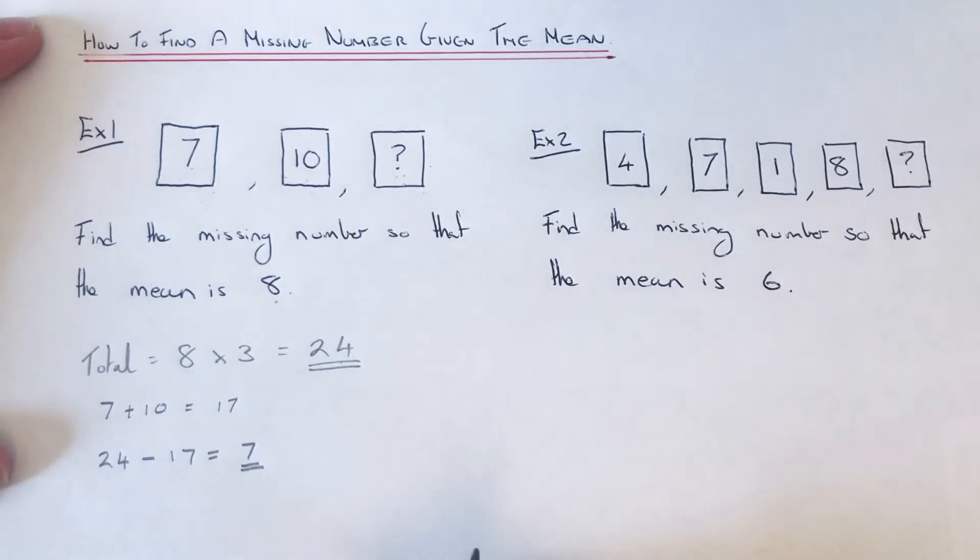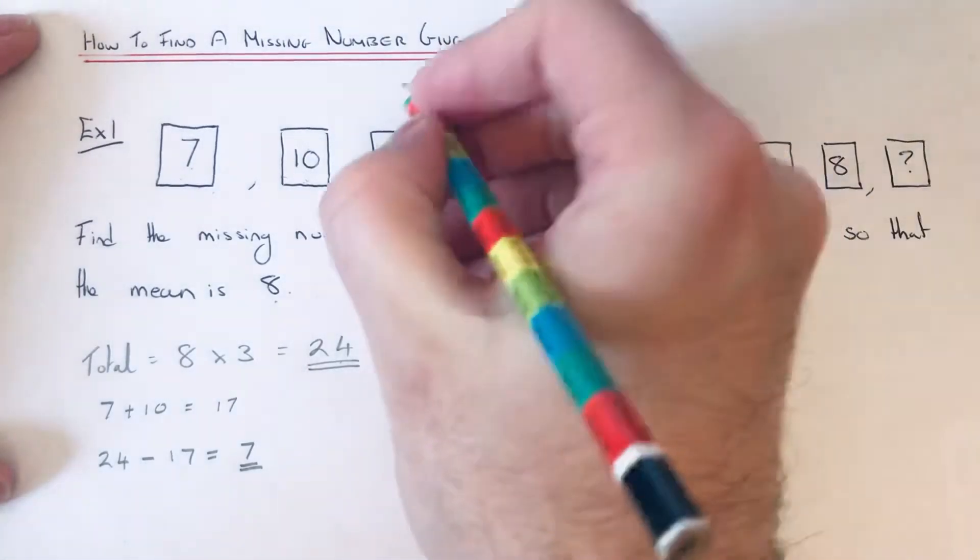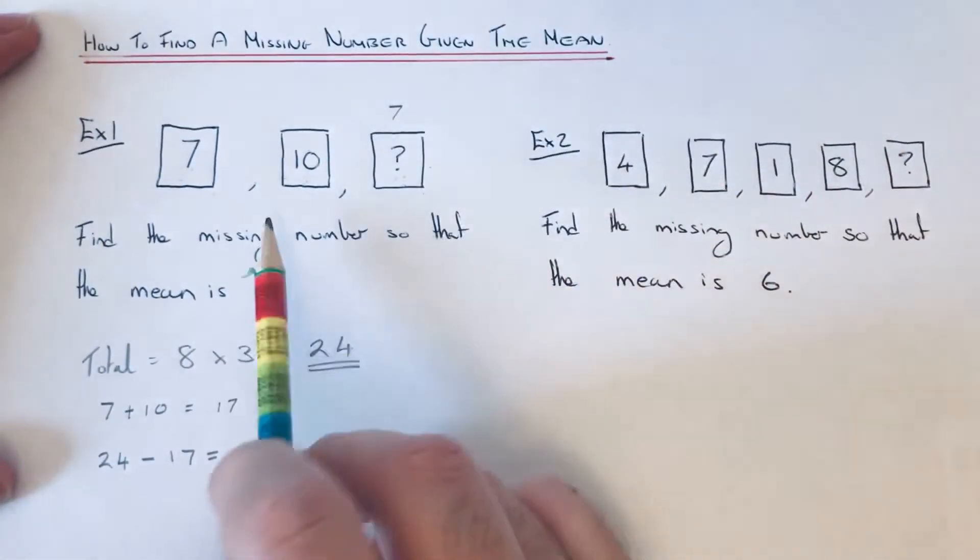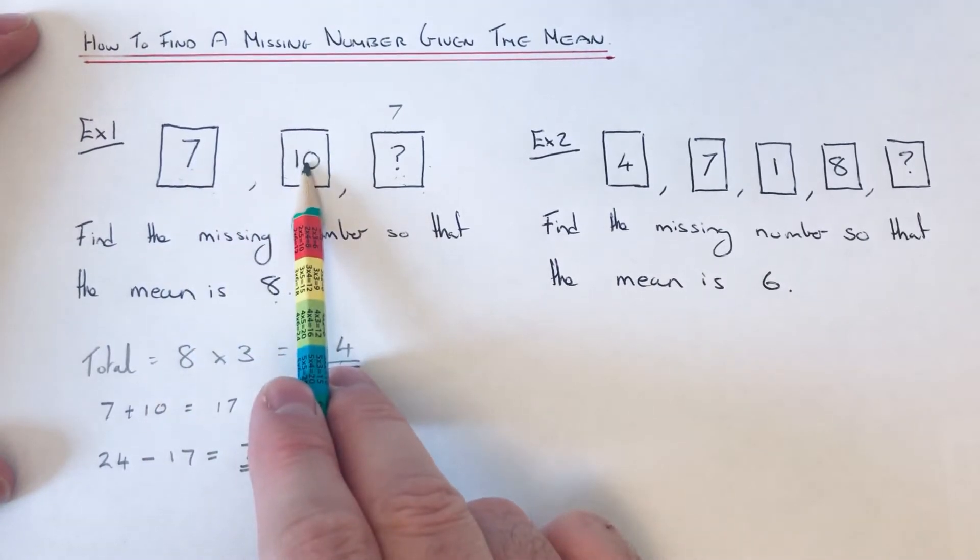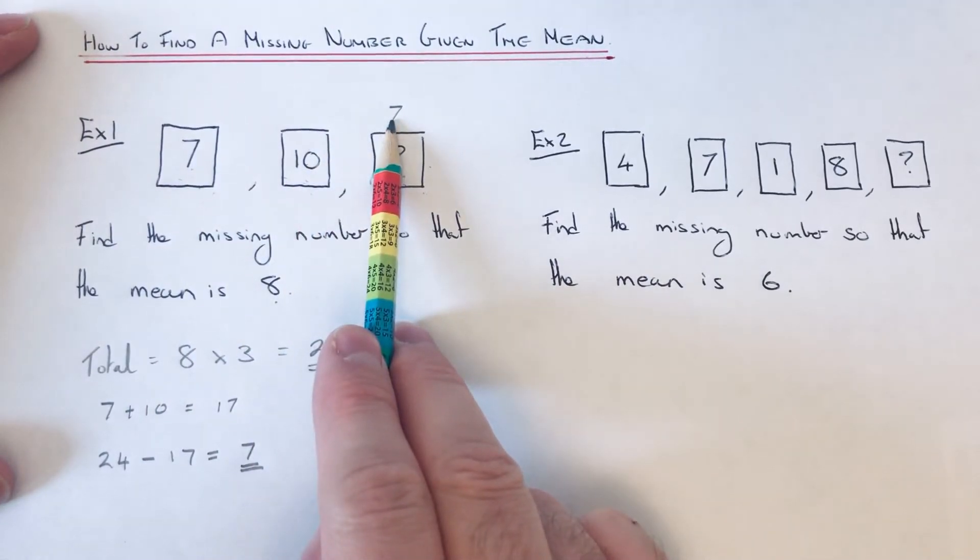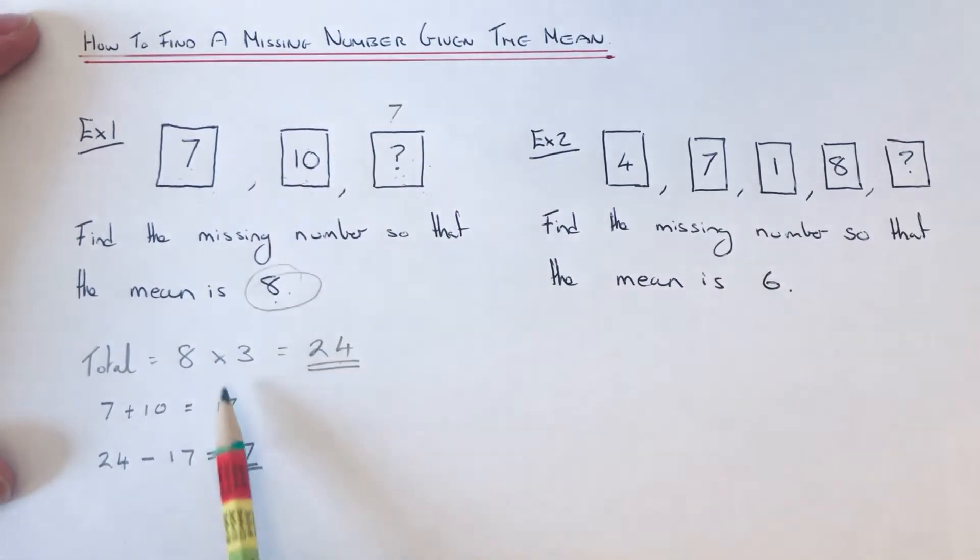So that is the number which is missing. You can also check this answer to see if it's correct. You can add the three numbers up: 7 add 10 is 17, add 7 is 24, and if we divide that by 3 that gives us an answer of 8. So we know that number is correct.